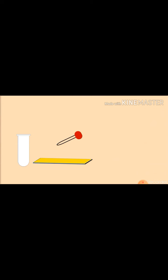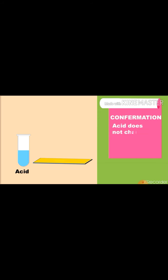Let's see the effect of acid on turmeric paper. Pour few drops of acid on turmeric paper. Here, there is no color change. Acid does not change the color of turmeric paper.